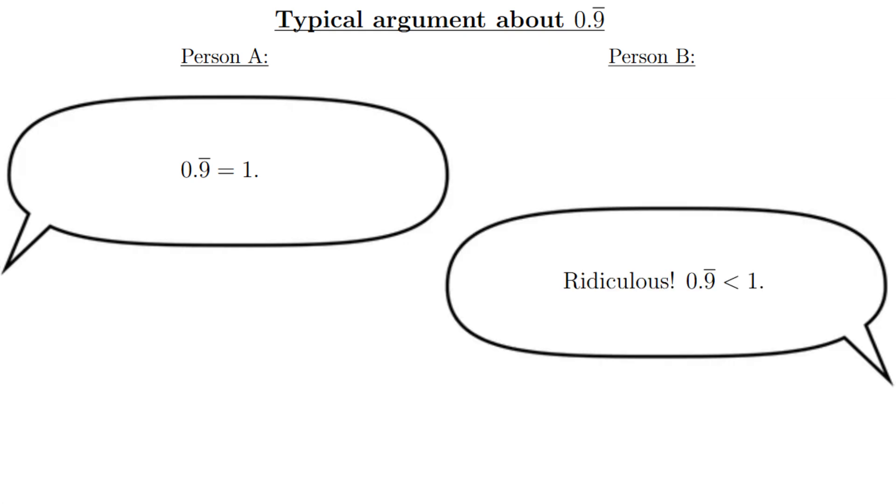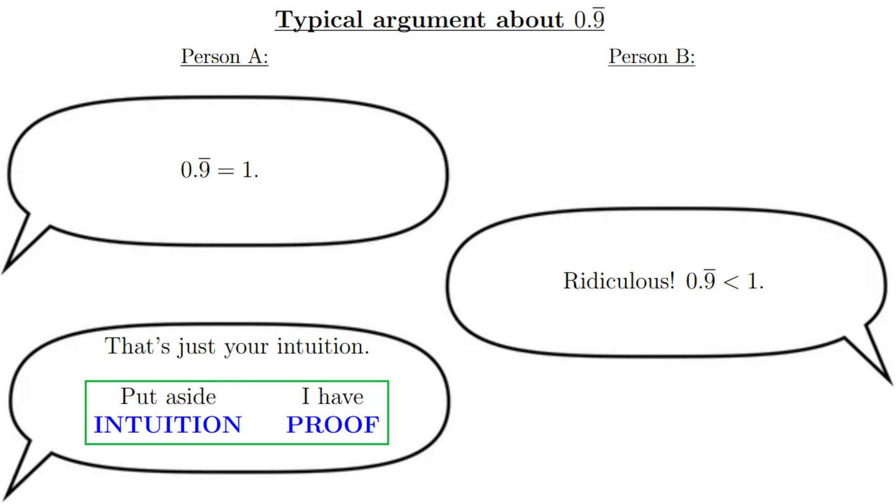In a typical argument about 0.9 recurring, person A says 0.9 recurring is exactly equal to 1, and person B says that's ridiculous, 0.9 recurring is obviously less than 1. Then person A says well that's just your intuition, we need to put aside intuition because I have a proof.